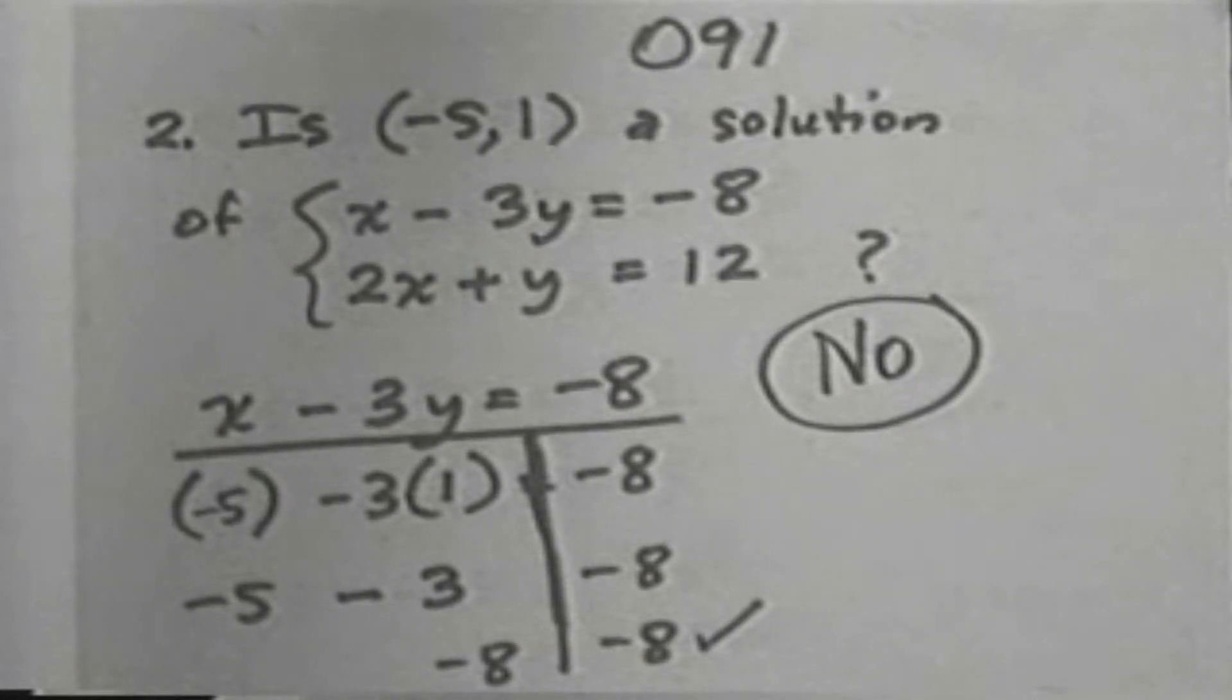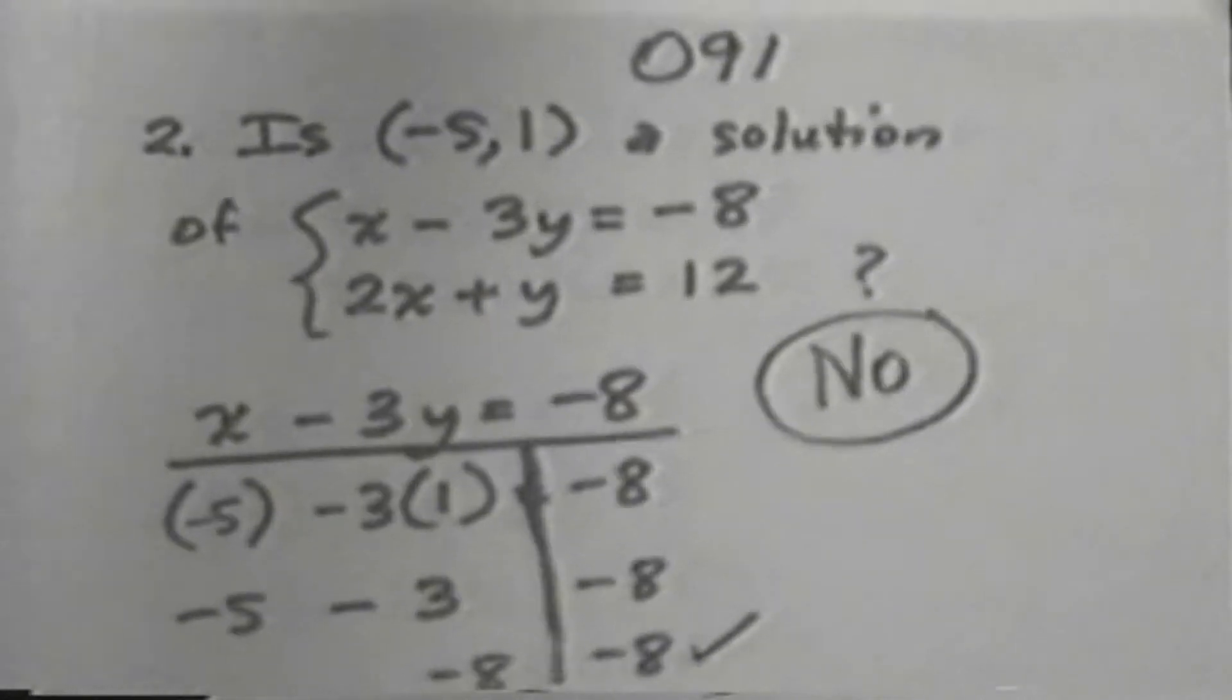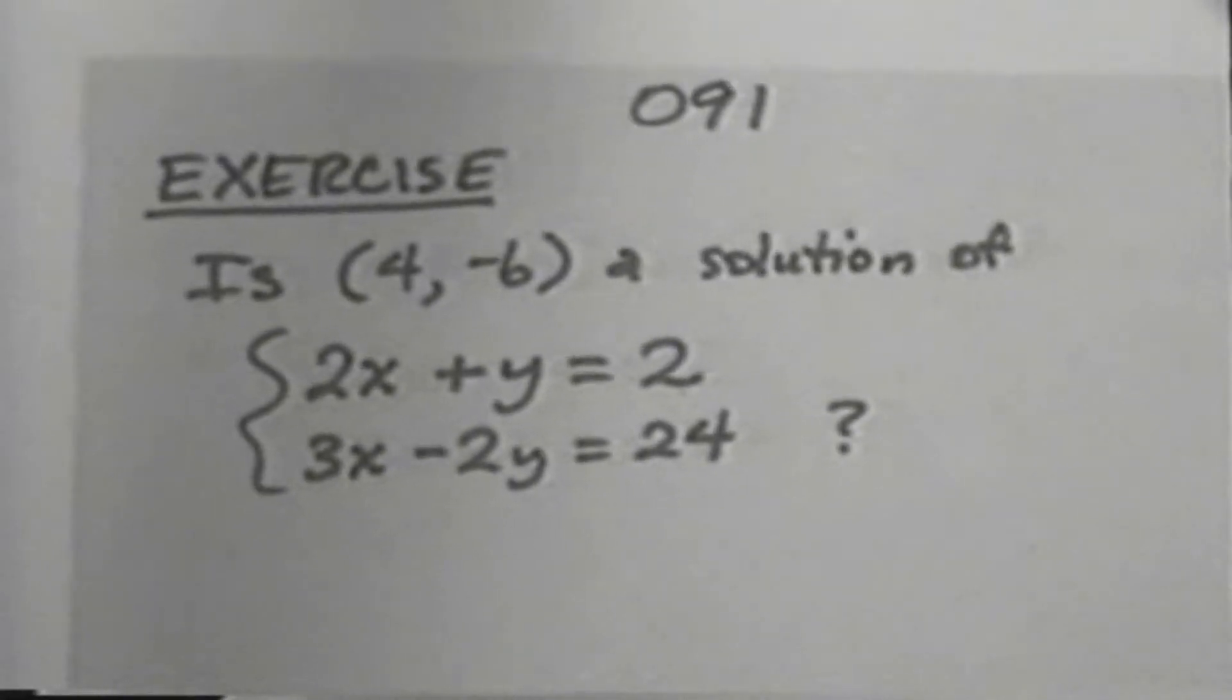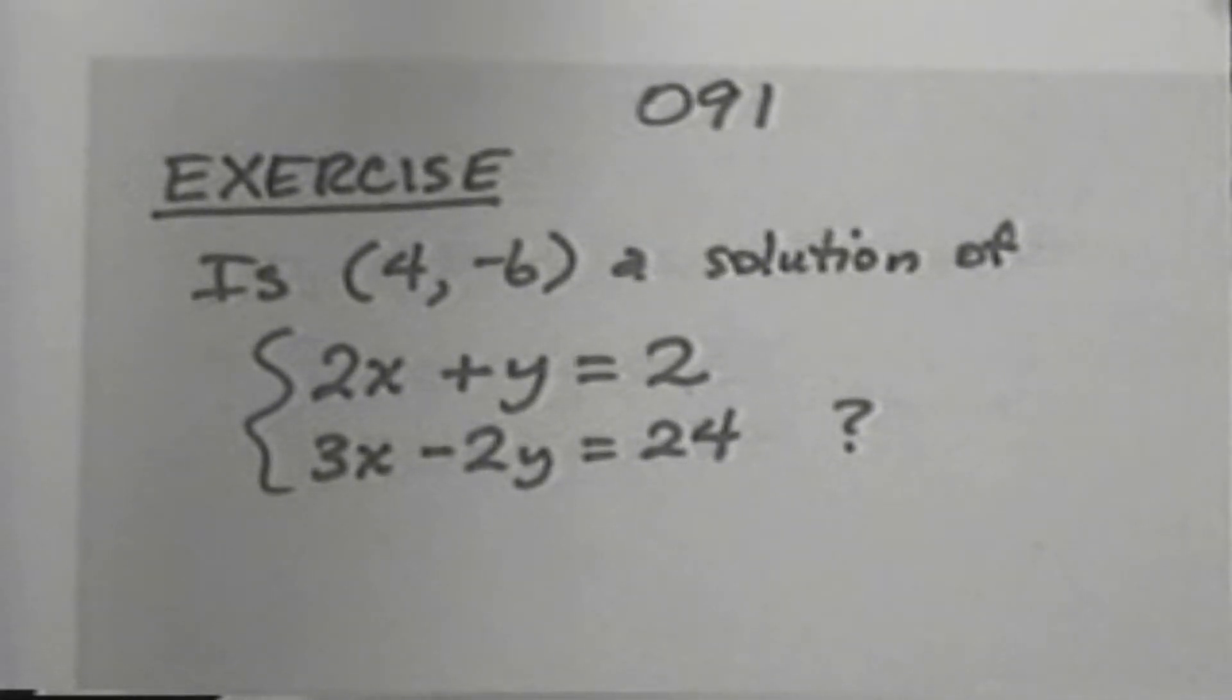Let me give you an exercise to try. Is 4, negative 6 a solution of the system 2x plus y equals 2, 3x minus 2y equals 24? Copy this exercise.